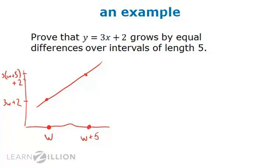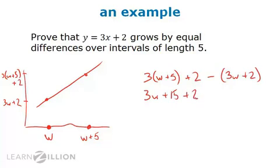I obtained both of those values by plugging w and w plus 5 in for x in the line's equation. We subtract these two y coordinates, distribute these two terms, and these two terms add up to 0, and we get just 15.